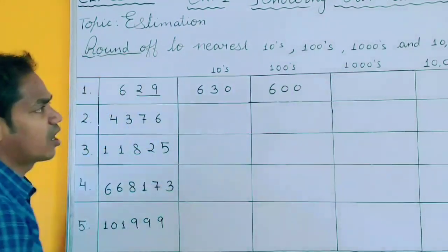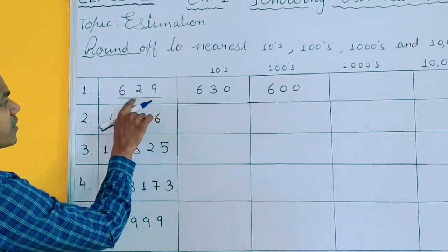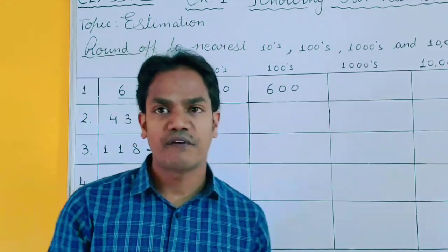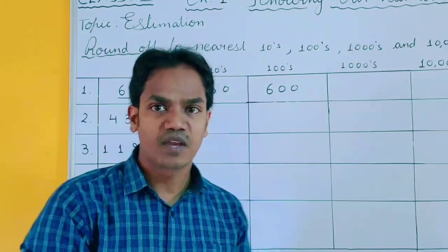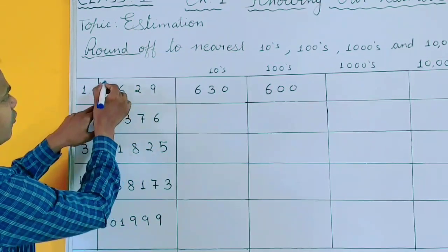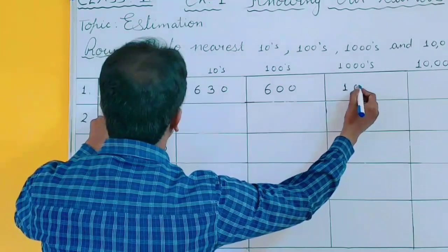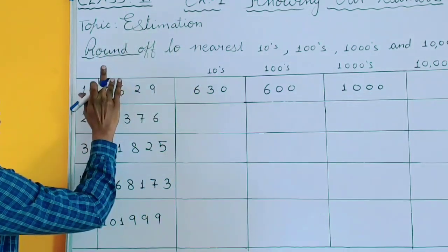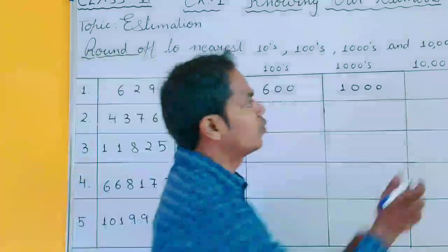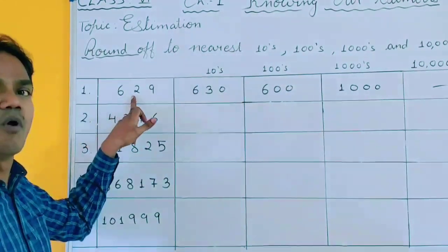Now rounding off to 1000: you will check the ones, tens, and hundreds — that 3-digit value must be 500 or more than 500. This is more than 500, so I will do plus 1 here, and it will become 1000. And you cannot convert 629 into 10,000 because this is a very small value.